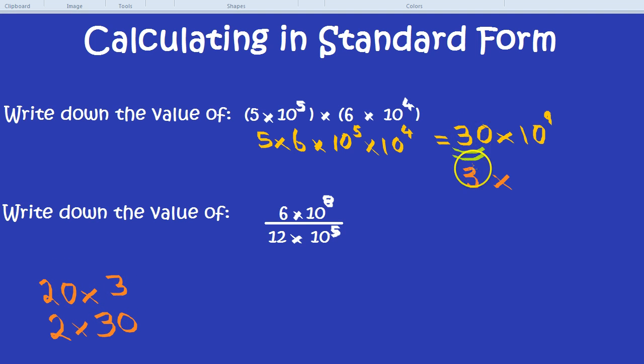We've divided the 30 by 10 to get it into standard form, so we have to multiply the 10 to the power of 9 by 10. And 10 to the power of 9 times 10 is 10 to the power of 10. It just bumps up the power by 1.